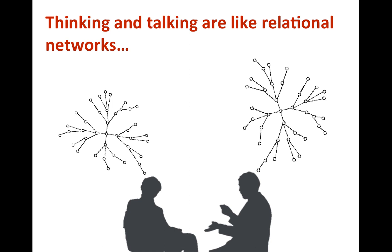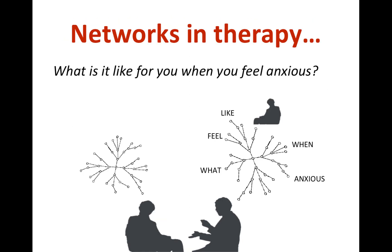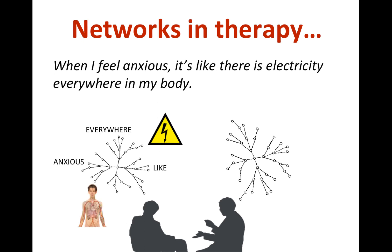This is how we arrive at the metaphor of relational networks for thinking and talking. In a therapy interaction, both the client and the therapist think and talk, so they produce relational networks all the time, and these networks interact with each other leading to some influence. For example, when the therapist asks 'what is it like for you when you feel anxious?', he's building relations among words and images that form sentences. And as the client answers 'when I feel anxious, it's like electric shocks everywhere in my body,' you can see again how words and images form a network.